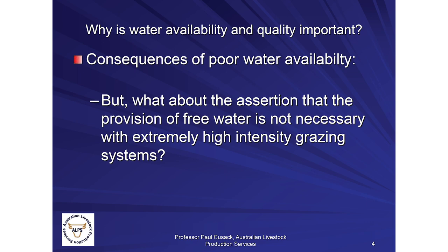There are some grazing systems where it's asserted that it's not necessary to provide water constantly. The rationale is that with extremely high intensity grazing systems with small numbers of animals on very small areas moved at an extremely high rate, it may be virtually impossible to constantly provide water. A lot of this work has been done in very high rainfall environments with pastures that are extremely high in water content, so much of the time the requirements of those animals can be met from pasture.